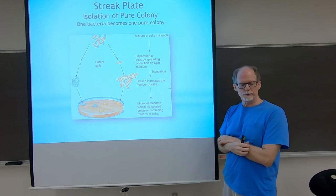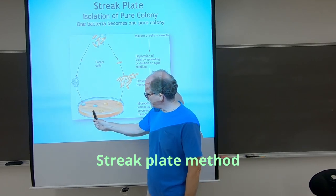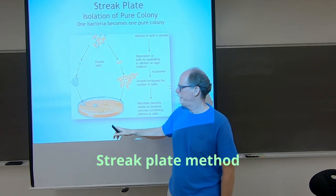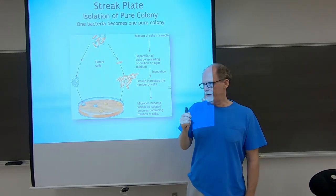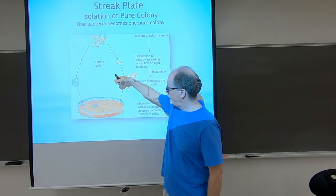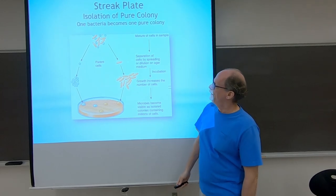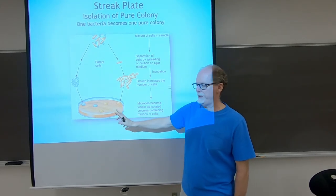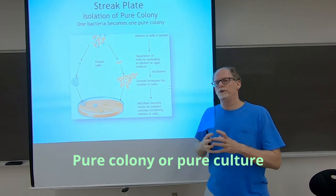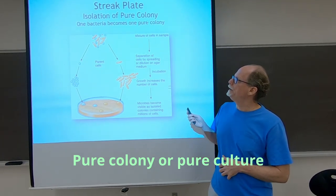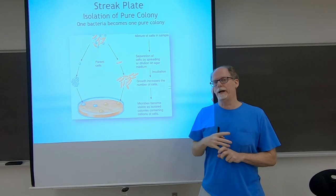A streak plate is where you've taken a loop or some sort of device to transfer the bacteria from something else and then streak out this plate. Each colony that's generated on the plate—you inoculate it, and then that one bacteria you left on the streak grows into a colony. One bacteria becomes one pure culture. The bacteria growing in that colony are from one type of bacteria.